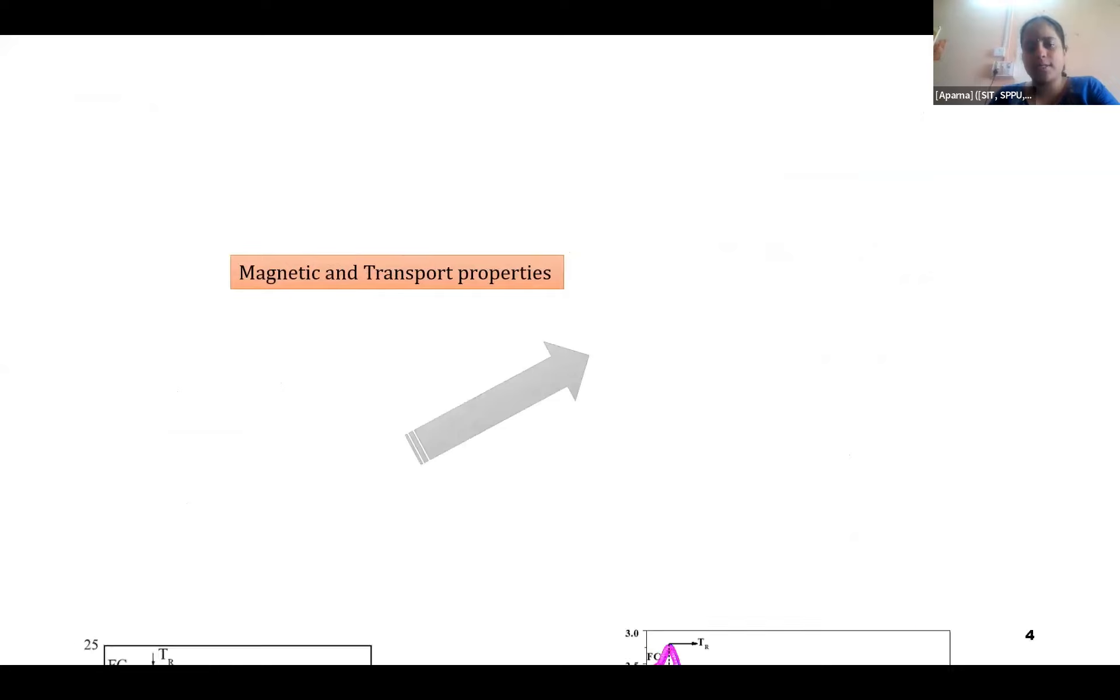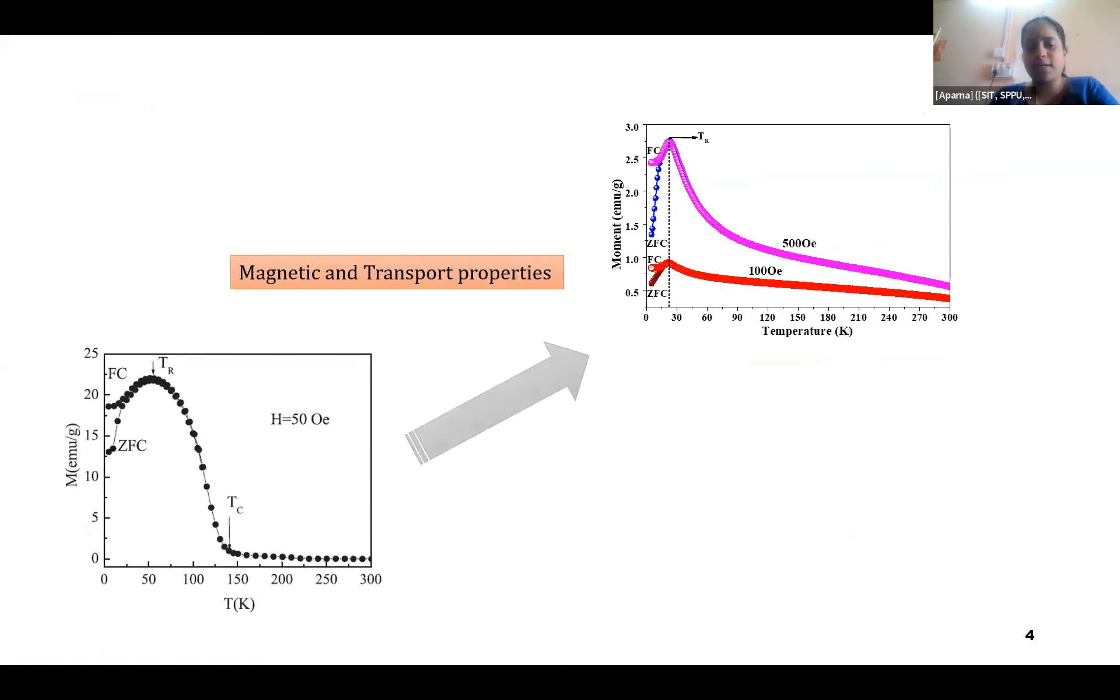And then from the magnetic and transport properties, from the magnetization data, that is the M-T data, there is a bifurcation with the ZFC and FC curve. When the data has been taken with an application of magnetic field in warming mode, and then also in the field-cooled mode, the data has been taken.